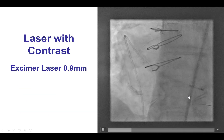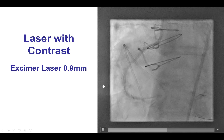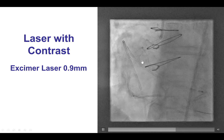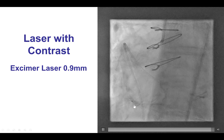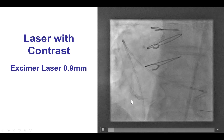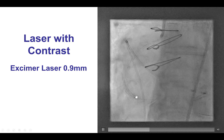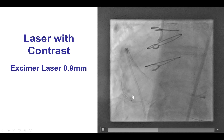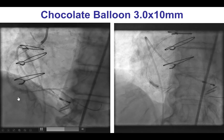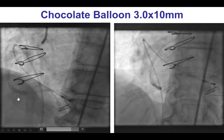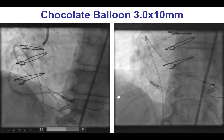After atherectomy did not work, we decided to do laser. This is laser with contrast — a 0.9 mm laser activated with simultaneous contrast injection, which causes an acoustico-mechanical effect that can modify the plaque and help expand the lesion. Unfortunately, it did not work. There remained a waist and under expansion on intravascular ultrasound.